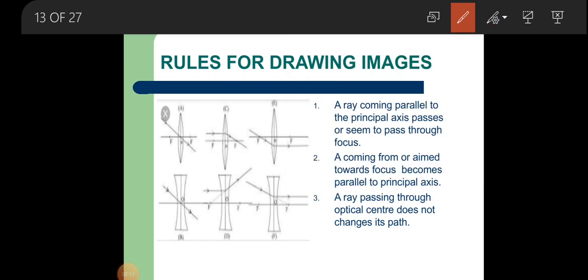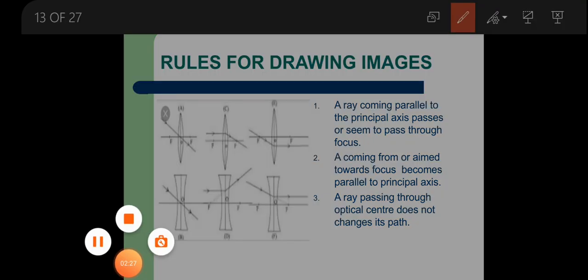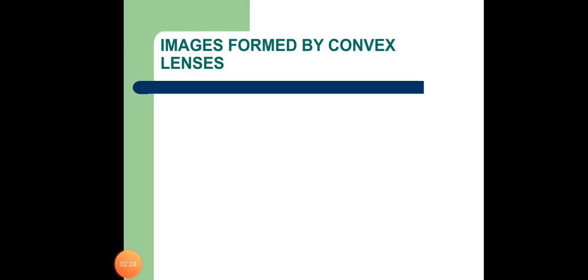Rule 3: whenever a ray passes through the optical center, it does not deviate from its original path — it continues to trace its original path. Now we will take images formed by convex lenses and discuss how a convex lens creates images of an object placed at different distances.